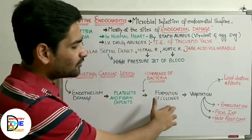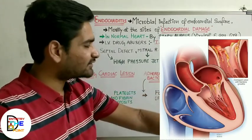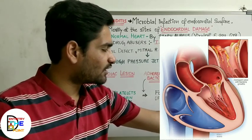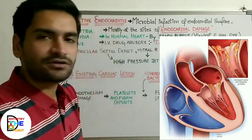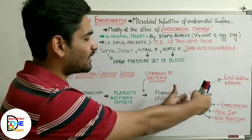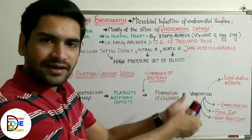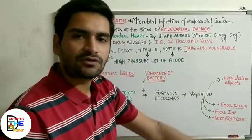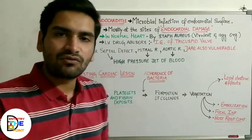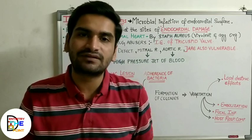Once bacteria replicate and start forming colonies, they create small numerous vegetations which may cause local destruction effects, or they may dislodge in the form of emboli, or may cause focal infection, or may cause host response complications. This is a basic introduction regarding infective endocarditis. Next we'll move on to the microorganisms responsible, then clinical features, investigation, and treatment.